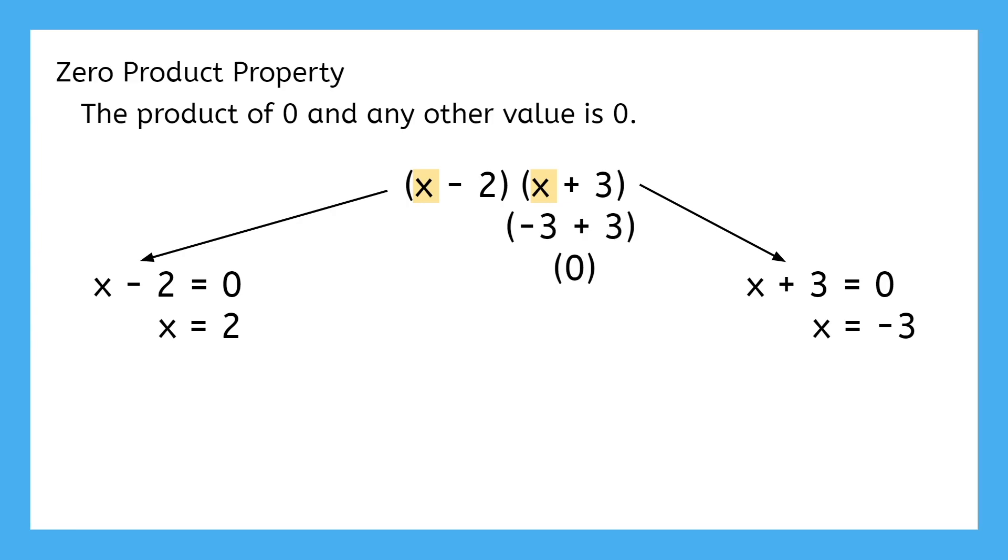We call these two numbers, two and negative three, zeros. Not like the number zero, but as in these cause the function to become zero. If the name zeros is too confusing, or if you're just tired of hearing me say the word zero, you can also call these the function's roots.